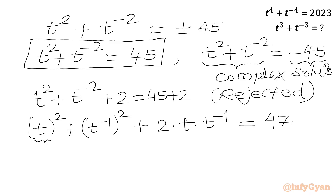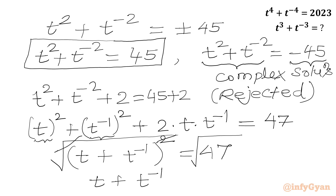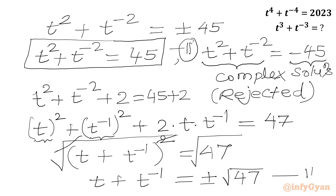If we consider t as a and t⁻¹ as b, then we have a² + b² + 2ab, which by the algebraic formula equals (a + b)². So we write (t + t⁻¹)² = 47. Taking the square root of both sides, we get t + t⁻¹ = ±√47. We call this equation 2 and equation 3.